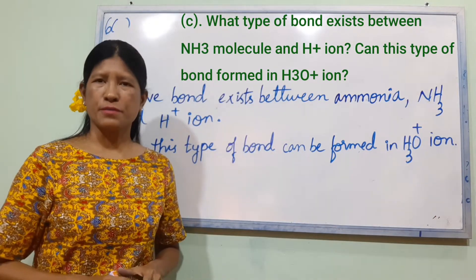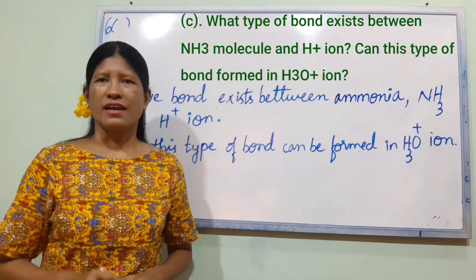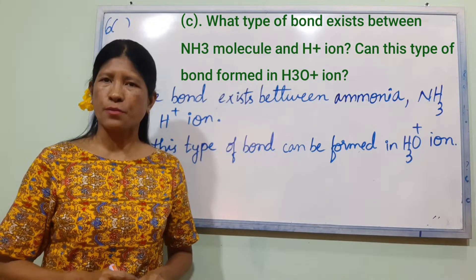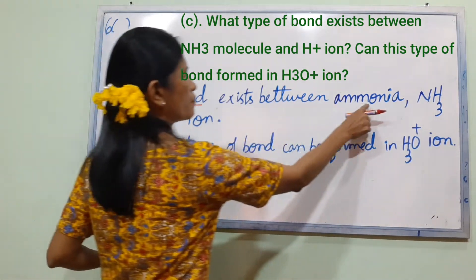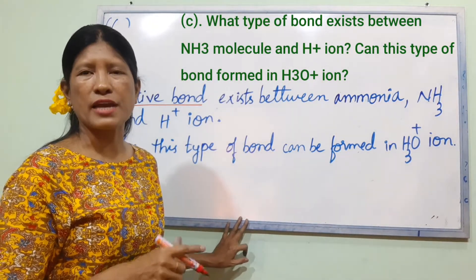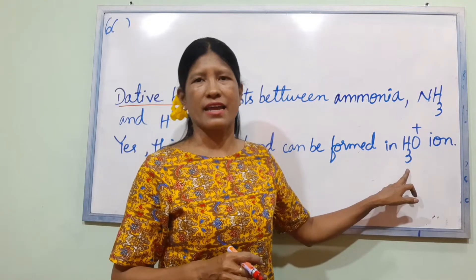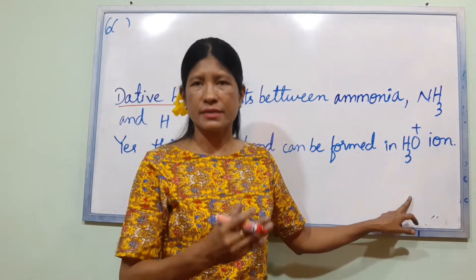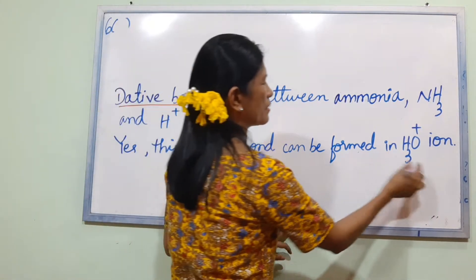Number C: What type of bond exists between an NH3 molecule and an H+ ion? Can this type of bond form in H3O+ ion? The bond that exists is a coordinate bond. H3O+ ion can be formed from H2O donating a lone pair to an H+ ion.